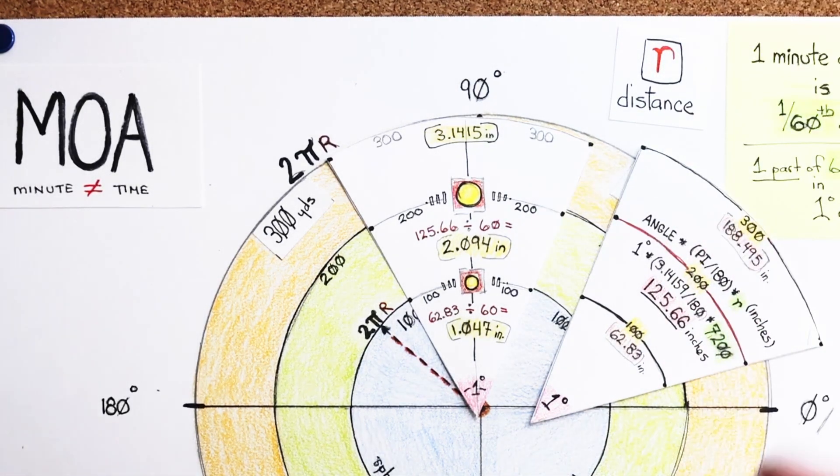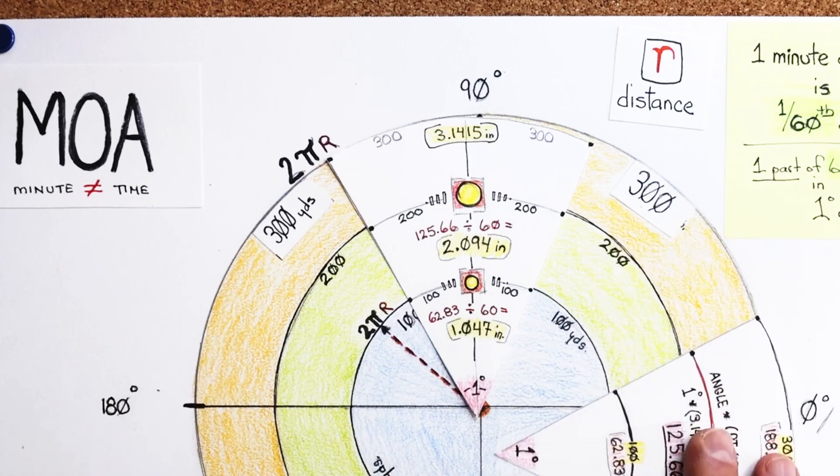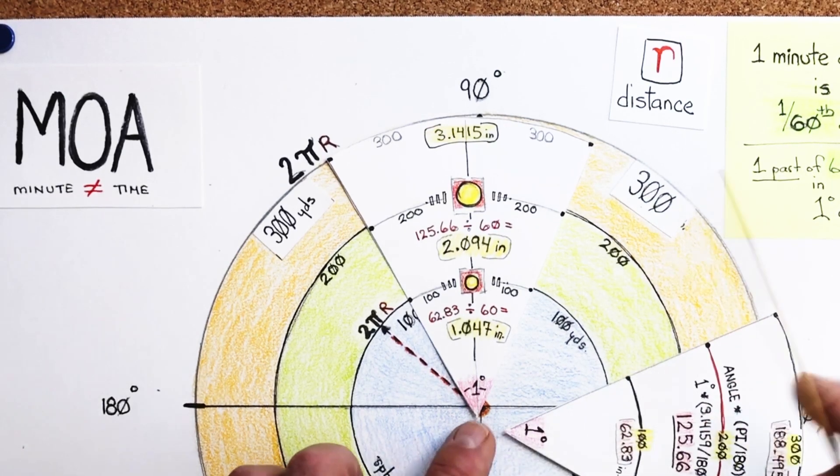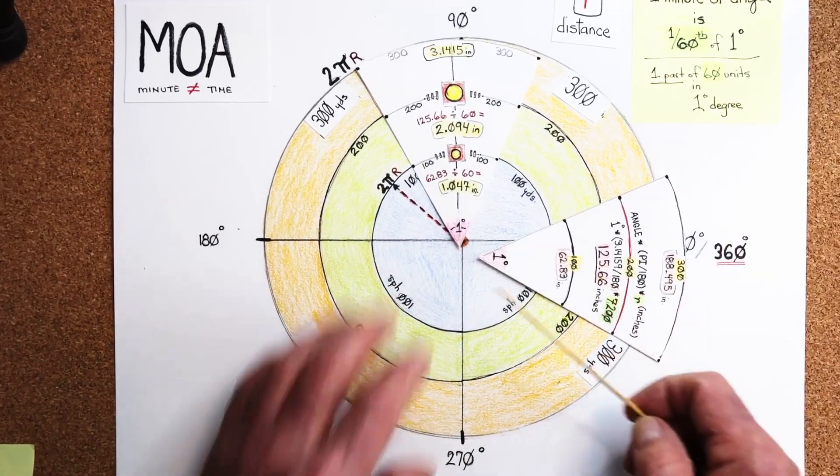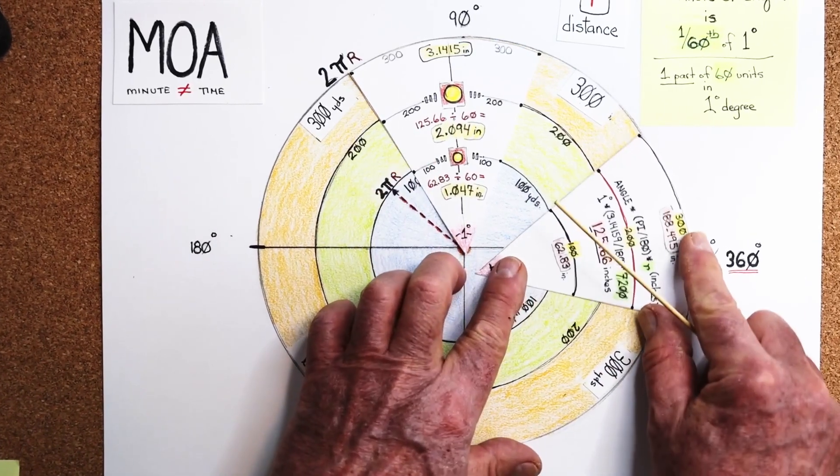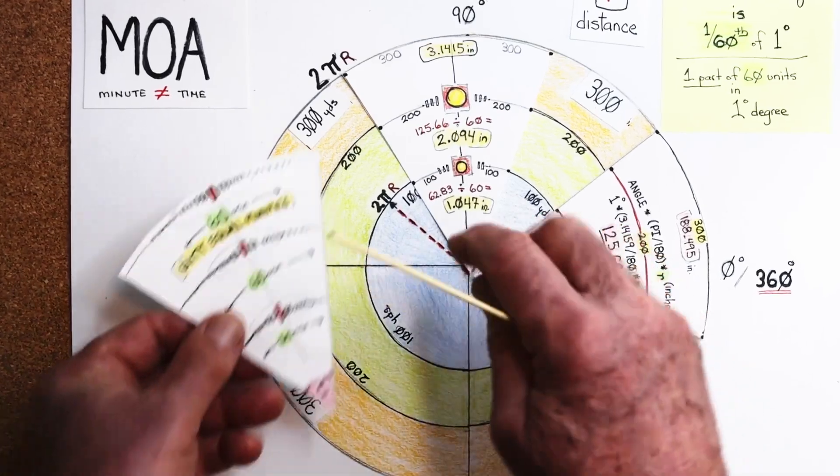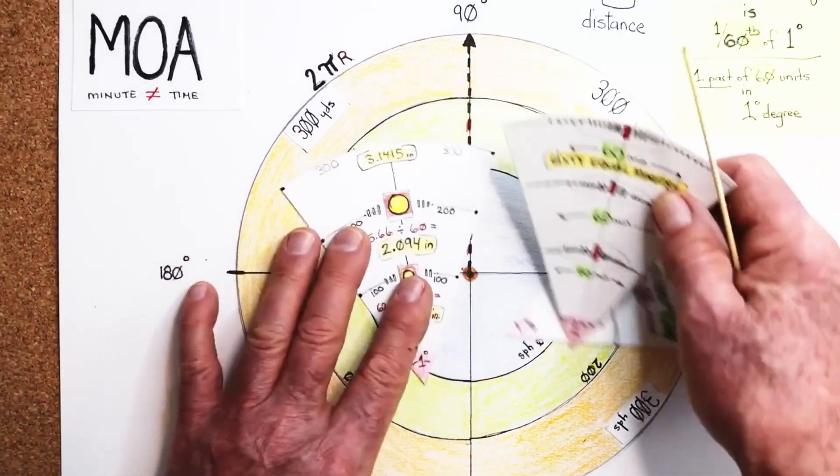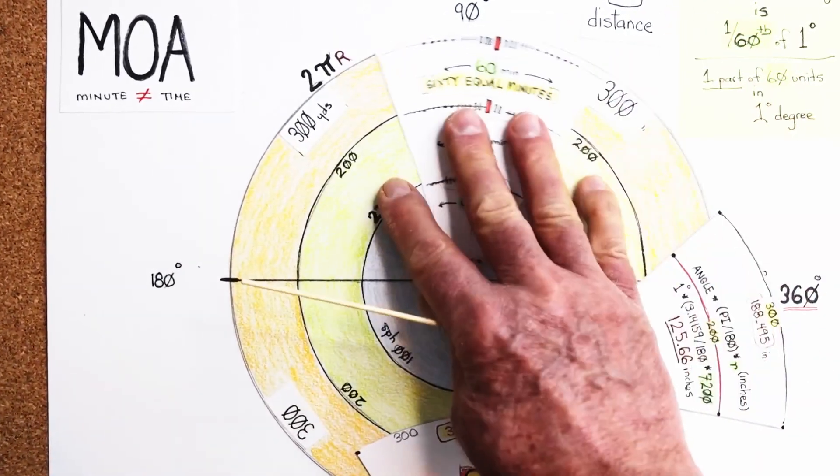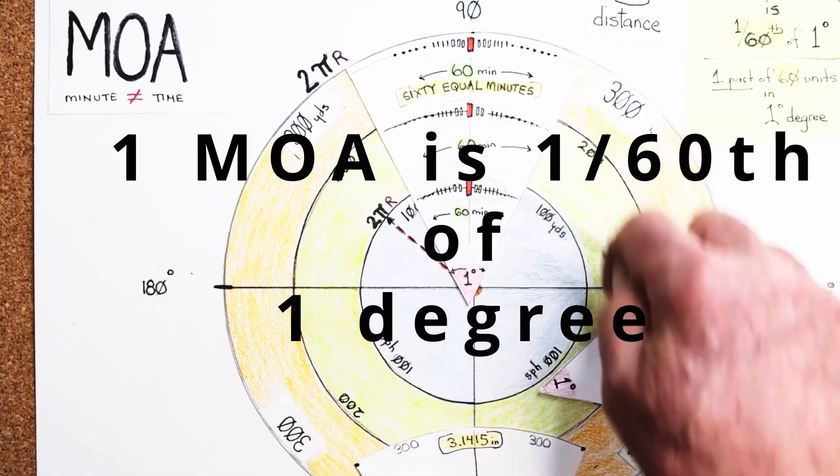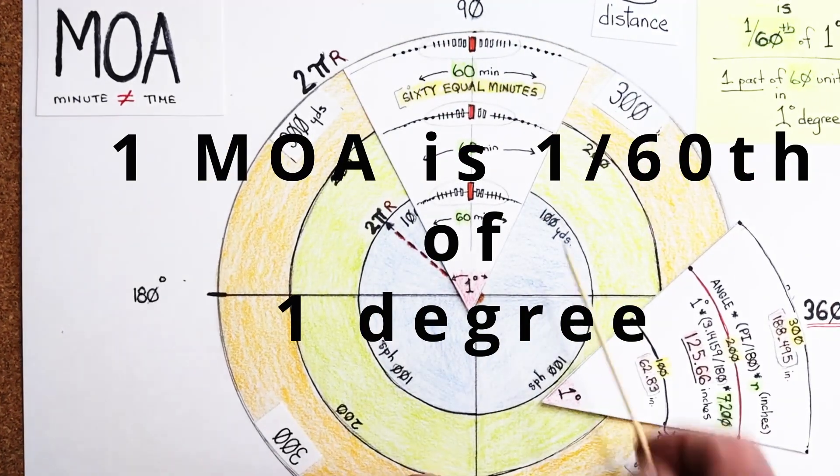So basically it's that easy, that simple. So the one thing I want you to remember is that you can stop the video. You can take a look at these graphs that I've made, and you can break it down on your own. So we have, this is the representation for 1/60th of one degree.